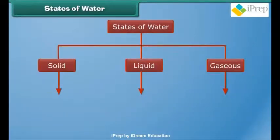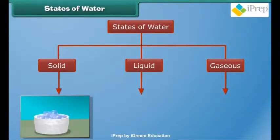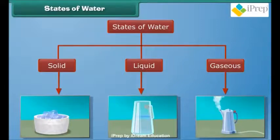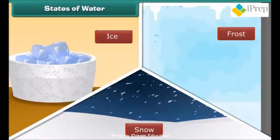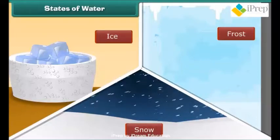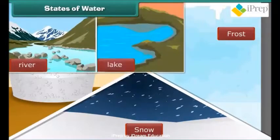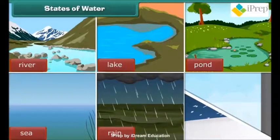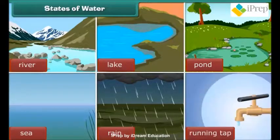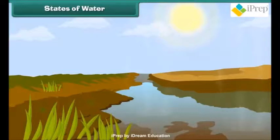Water exists in three states: solid, liquid and gaseous. Ice, snow and frost are examples of water in the solid state. You see liquid water in rivers, lakes, ponds, sea, when it rains and the water coming out of a tap. Water vapor is a gas in the air — you can't see it because it is invisible.